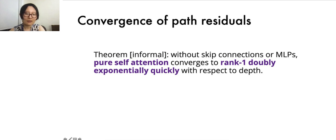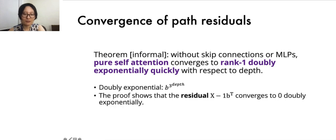Let's take note of the doubly exponential rate of convergence here. For instance, to go from 1,000 to 1, an exponential convergence will likely take, say, 10 iterations, whereas a doubly exponential convergence will take just a few iterations, i.e., a few layers. We prove this by showing that the residual, or the projection away from a rank-one component, converges to zero doubly exponentially quickly.